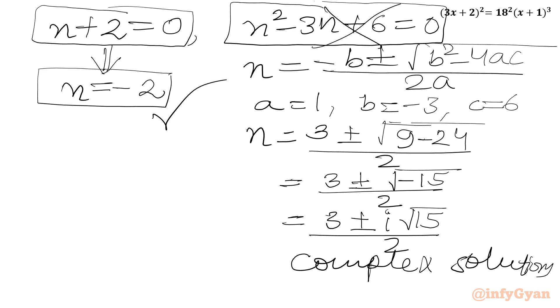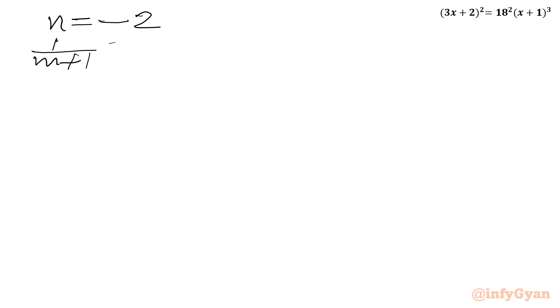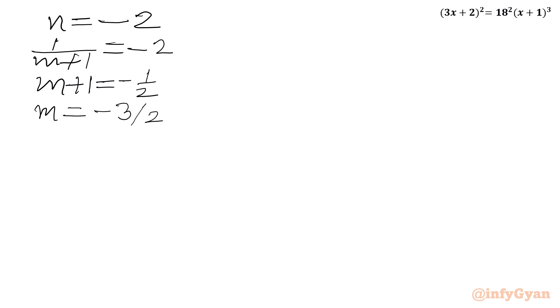Now back-substituting: n was substituted as 1/(m + 1). With n = -2, we get 1/(m + 1) = -2. Taking reciprocals of both sides: m + 1 = -1/2, so m = -3/2. Therefore 1/m = -2/3.